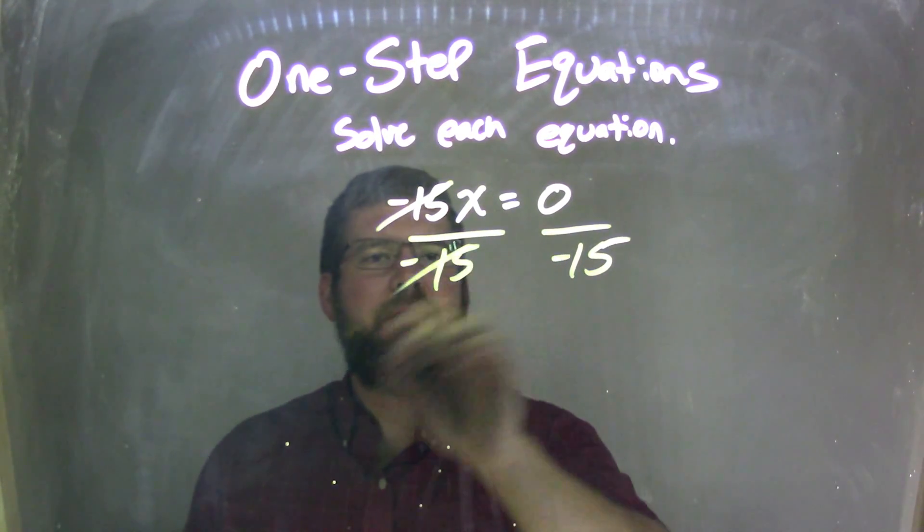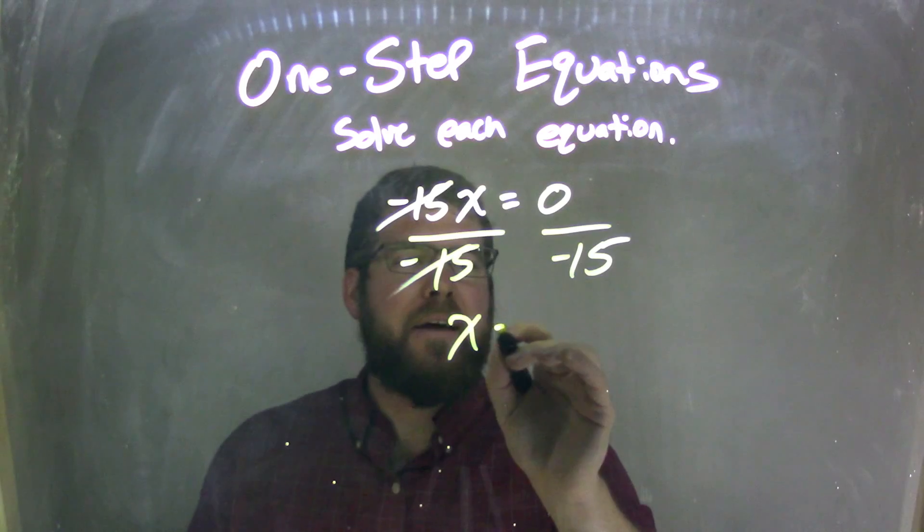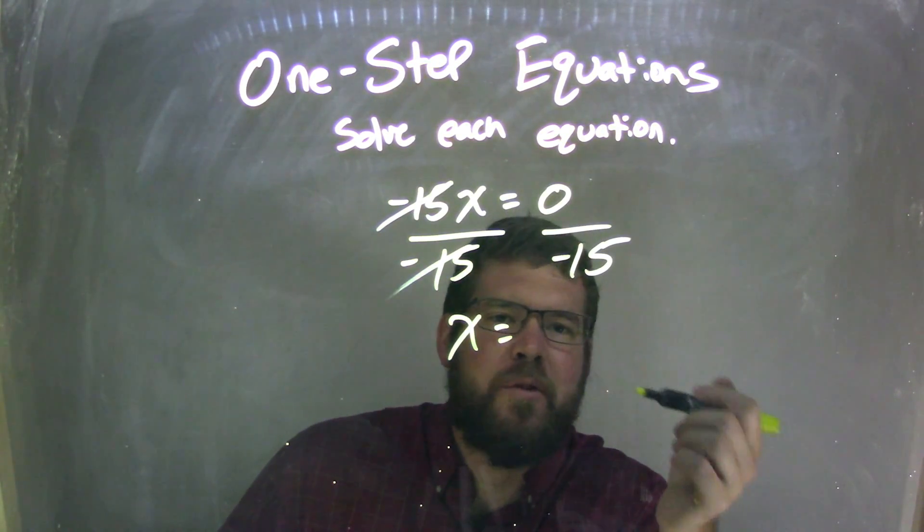The negative 15s cancel, so we're left with a positive x. Then what's 0 divided by negative 15?